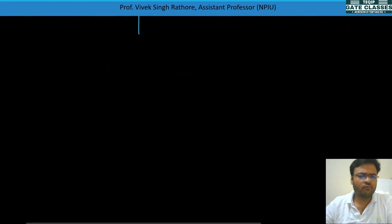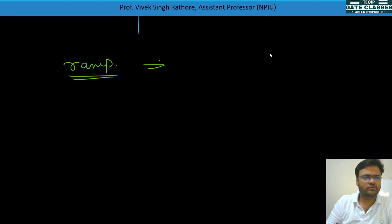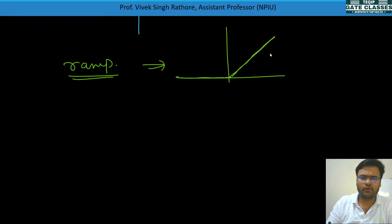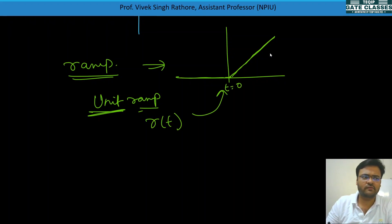Now we look at the effect of time shifting on the ramp signal. The ramp signal r(t) has a change of slope at t = 0; unit ramp means the slope change is 1.